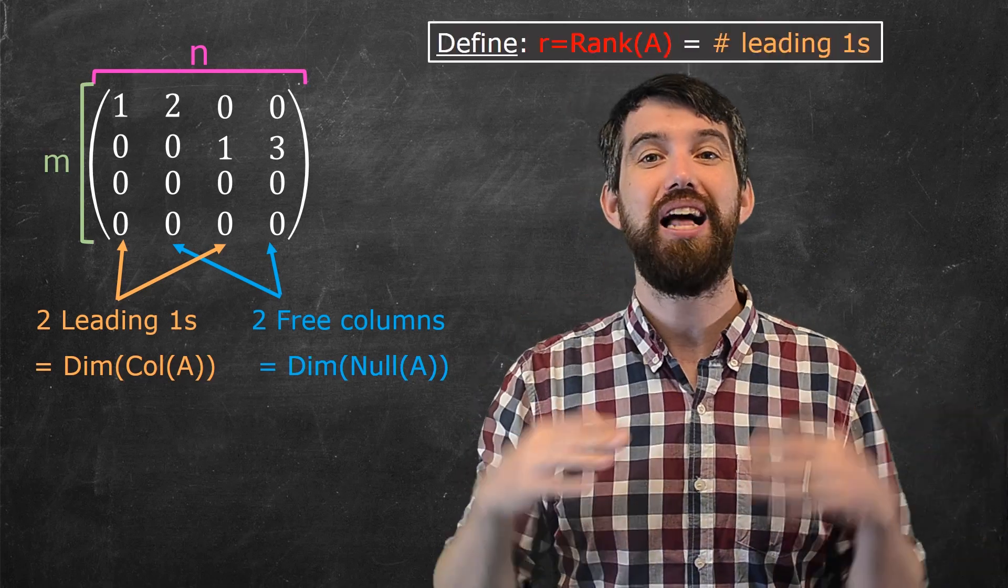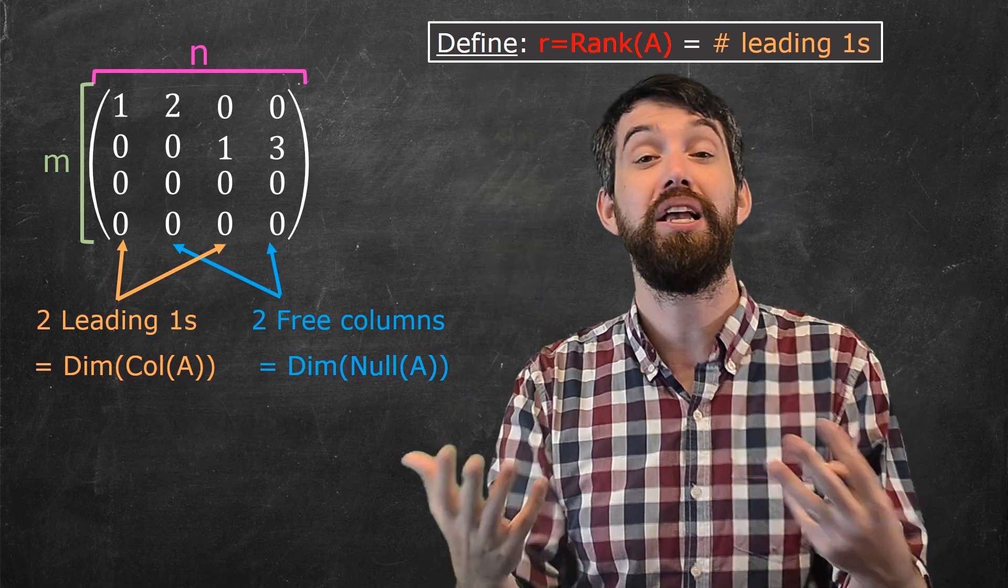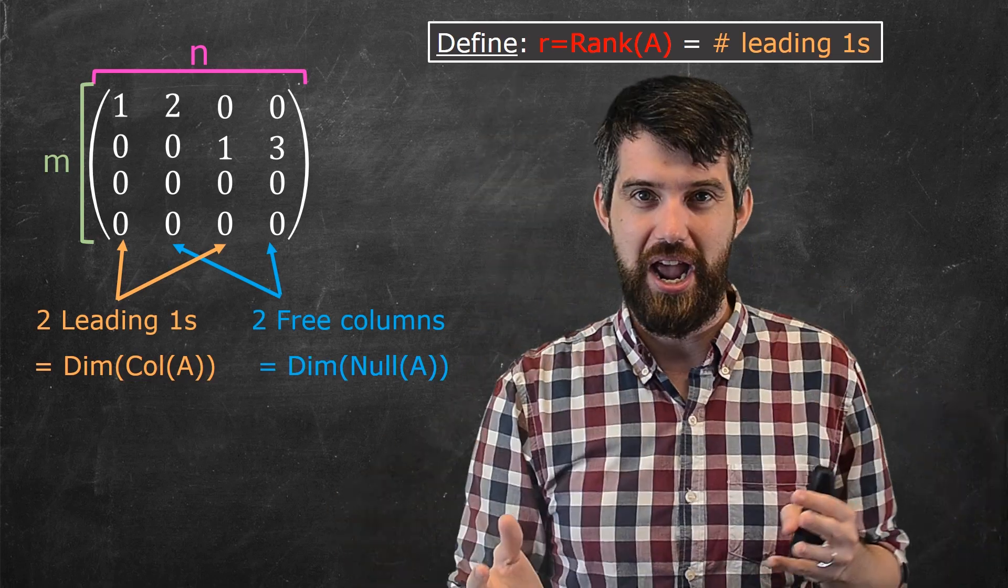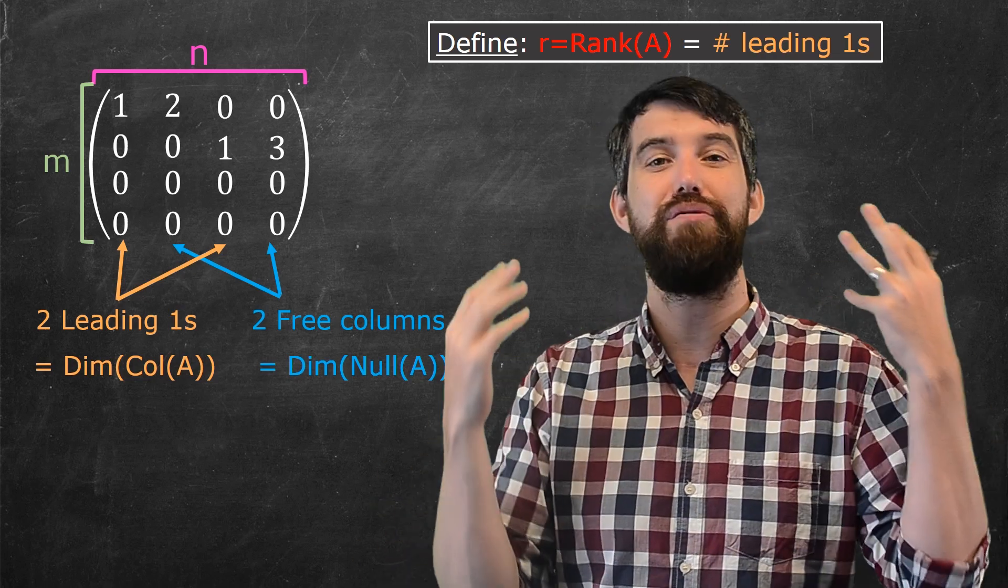Now, I need to define a little bit of new notation here called the rank. And r, or the rank of a matrix A, is just a shorthand for the number of leading ones. We talk about the number of leading ones all the time, so we have this shorthand for it.